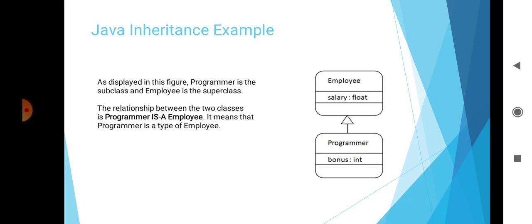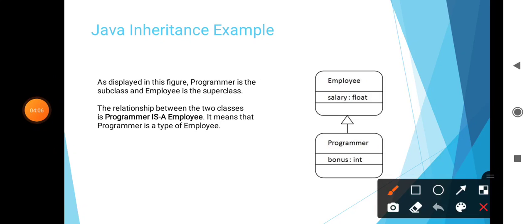For example, in this Java inheritance diagram, Programmer is the subclass and Employee is the superclass. The relationship between the two classes is an IS-A relationship: Programmer IS-A Employee. This means that Programmer is a type of Employee.